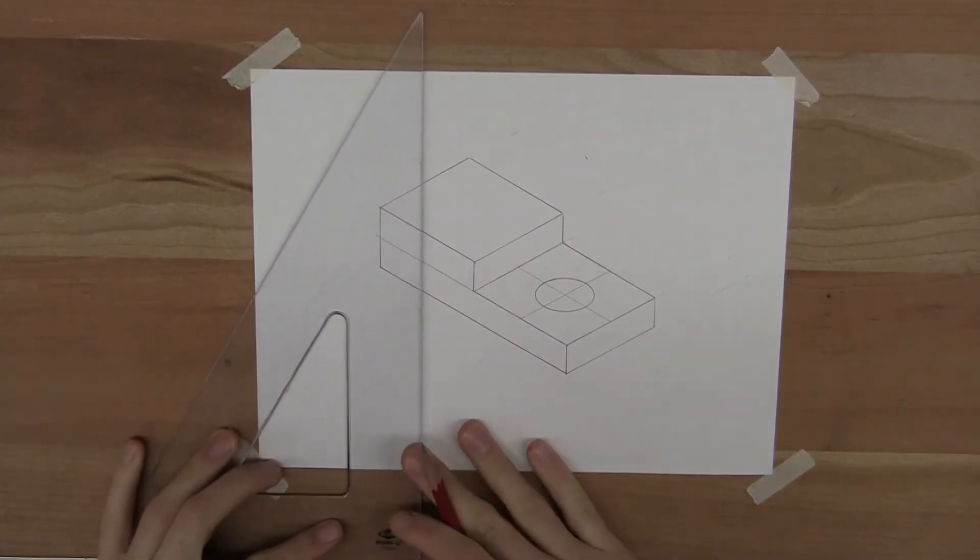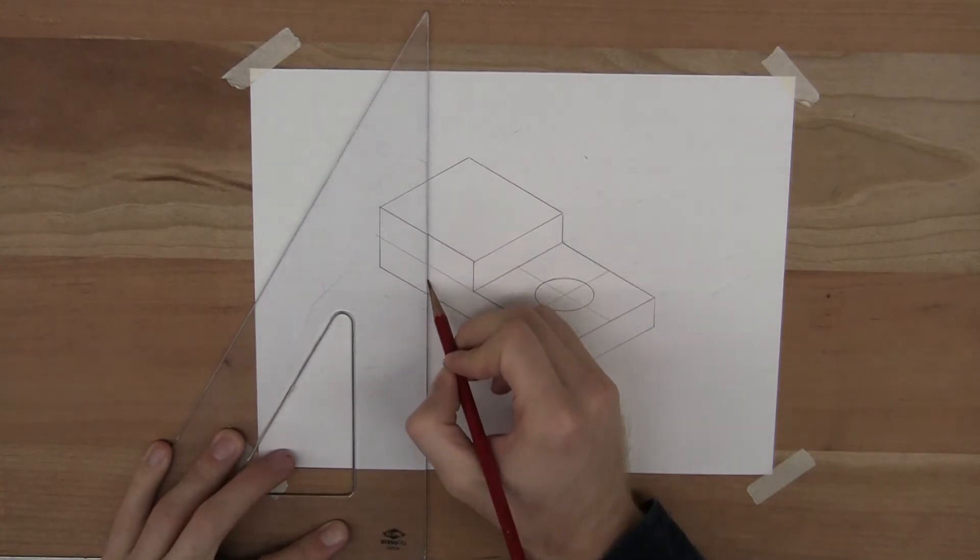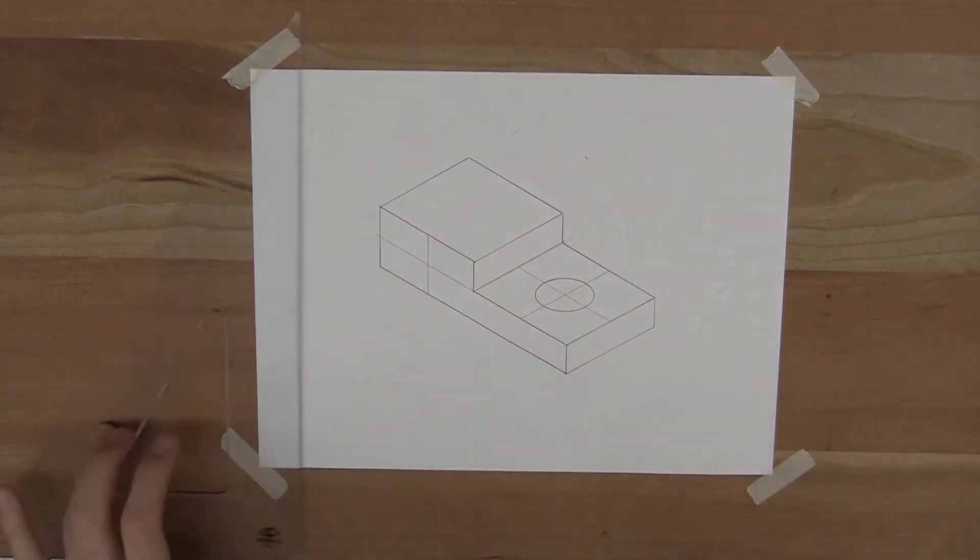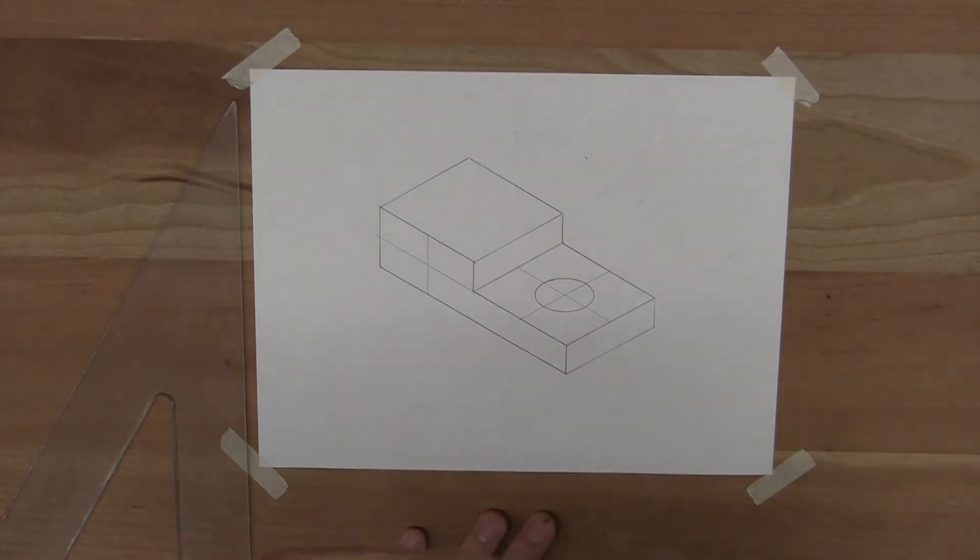Now you might start to see that before we're using 30 degree lines in opposite directions as our center lines. Now we have a vertical line and a 30 degree line.